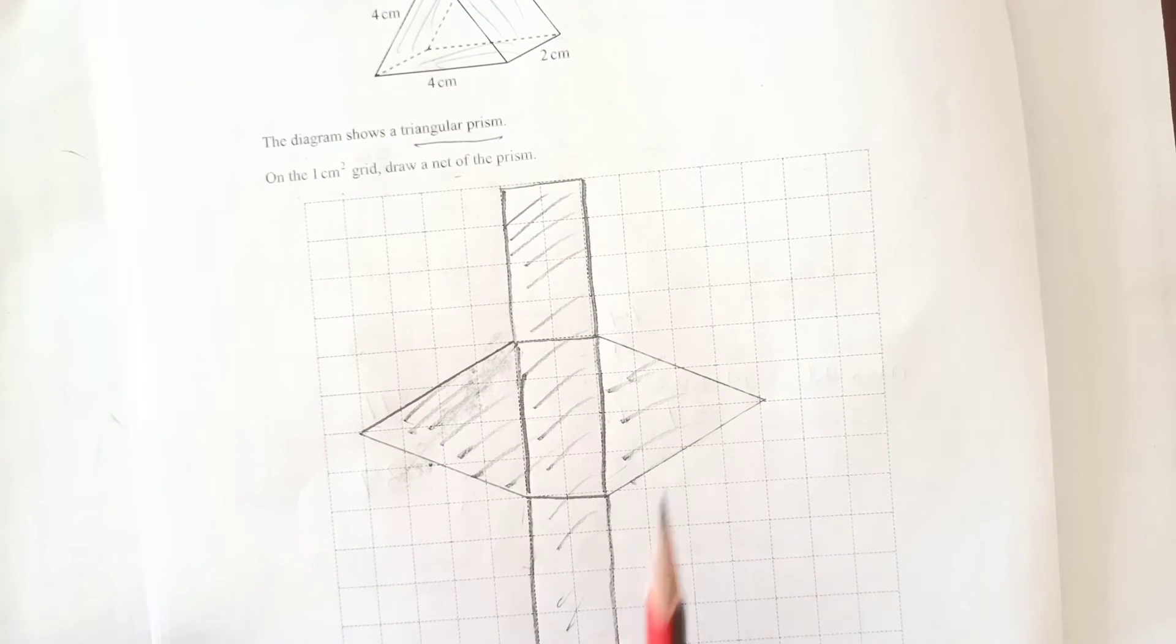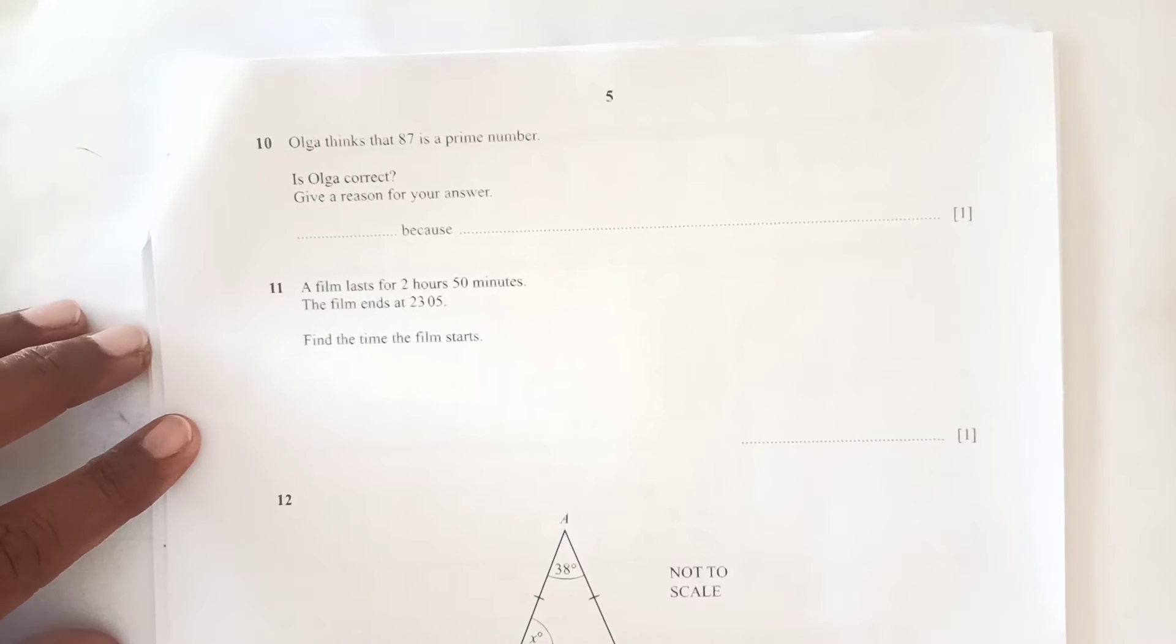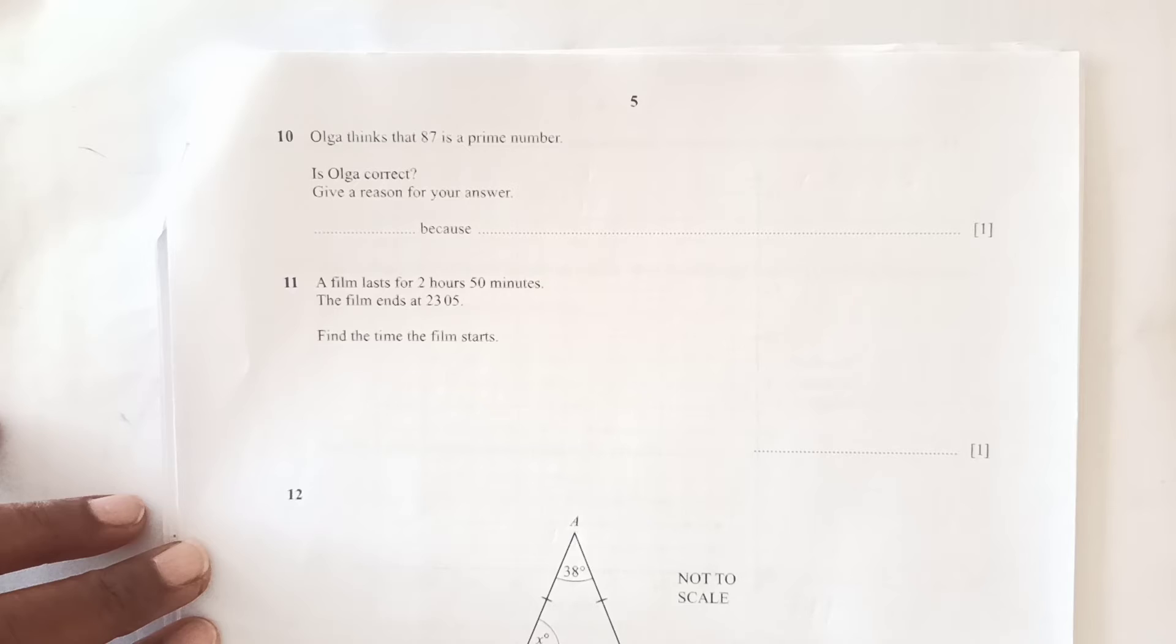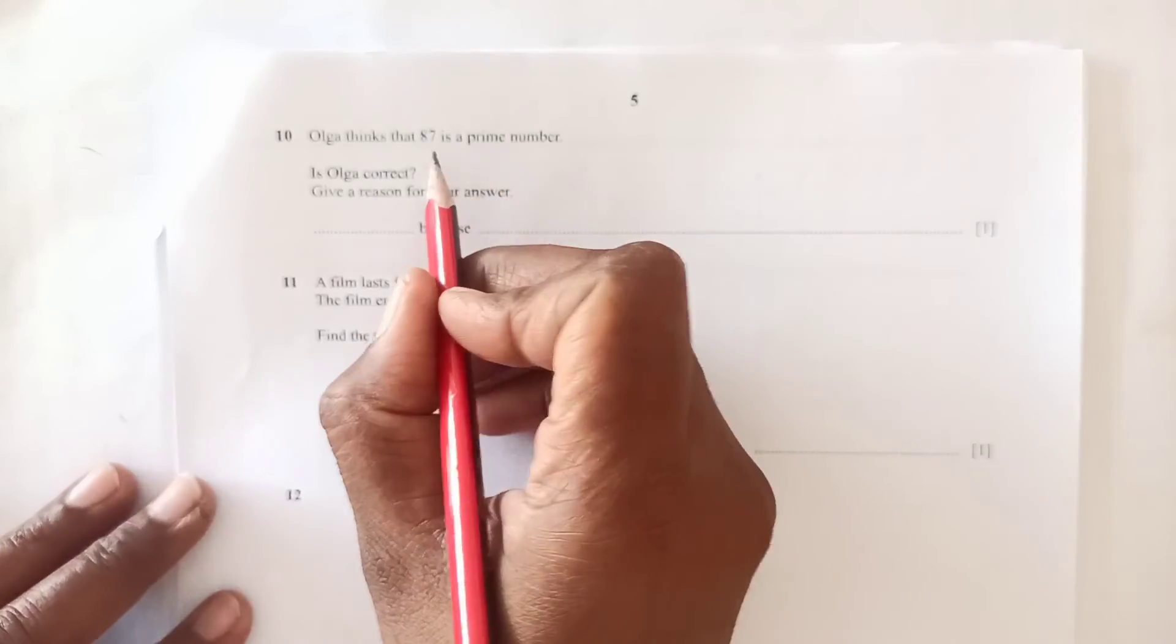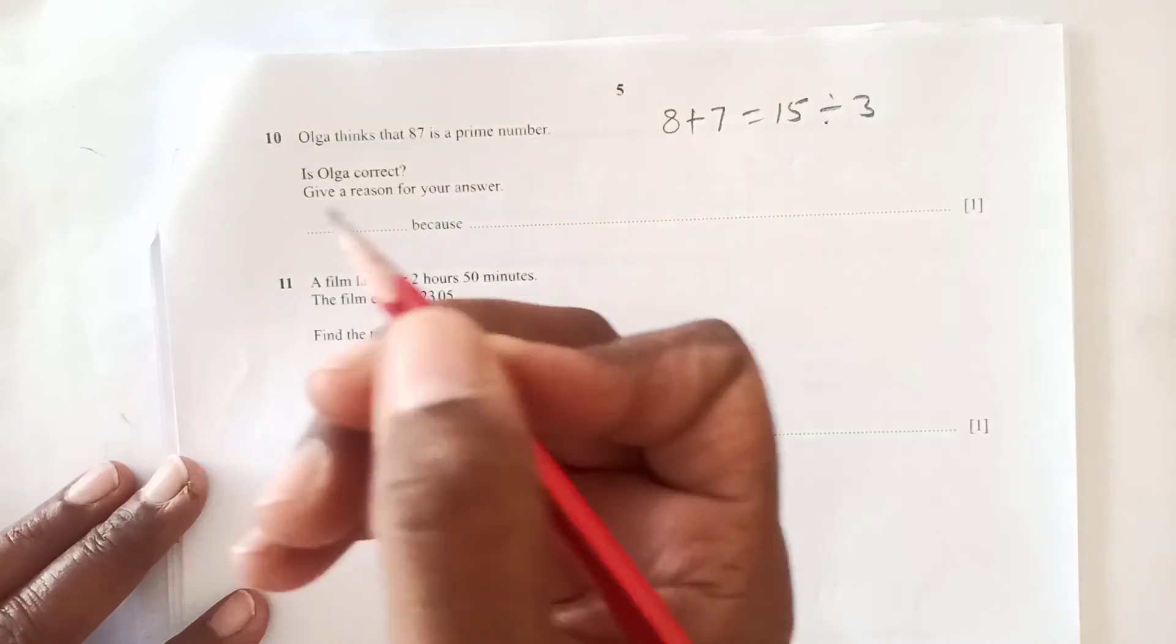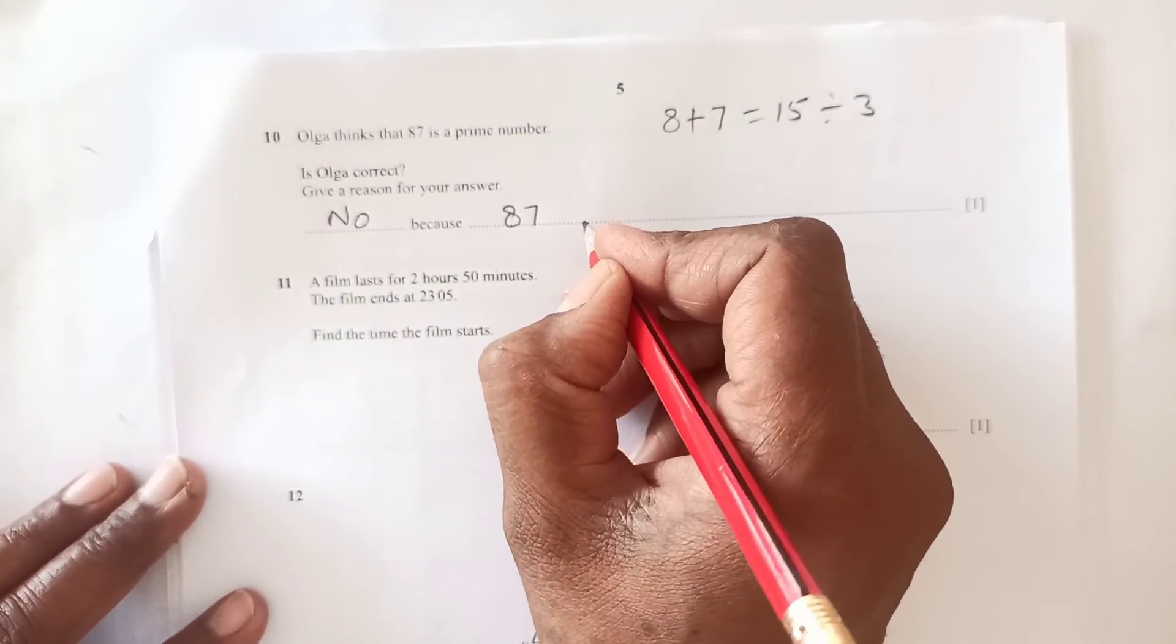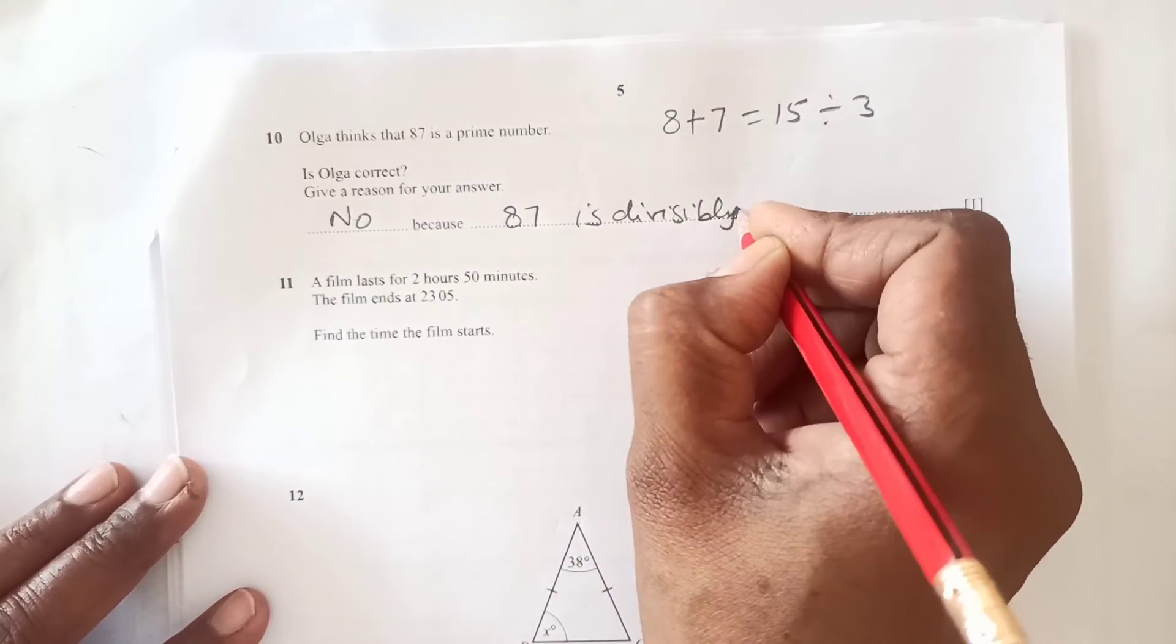Number 10: Olga thinks that 87 is a prime number. Is Olga correct? Give a reason for your answer. Now 87, if you add 8 plus 7, is 15, which is divisible by 3, so it's not a prime number. We will say no, because 87 is divisible by 3.